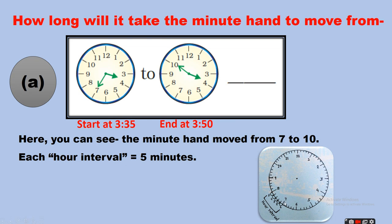You can see from 7 to 8 there are 5 divisions. There are 5 small divisions between any two numbers on the face of the clock — this is called our interval. It takes 5 minutes for the minute hand to move from one number to the next. So from 7 to 10: 5 plus 5 plus 5.